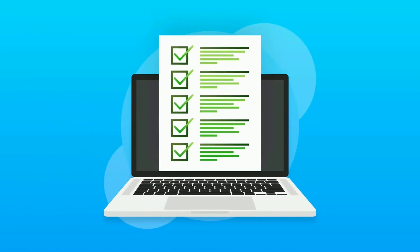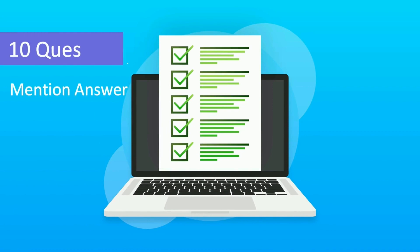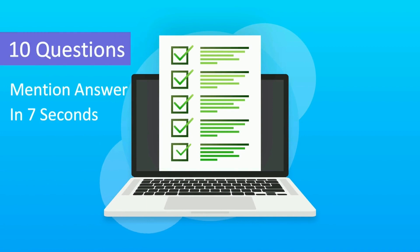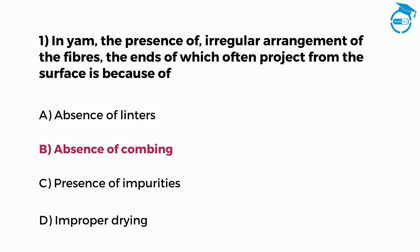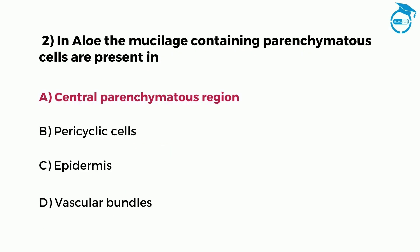This test consists of 10 questions and you will get 7 seconds to write your answer in the comments. For example, if the answer to question 1 is option B, you can write it in the comments as 1B. Similarly, if the answer to question 2 is option A, you can write it in the comments as 2A.